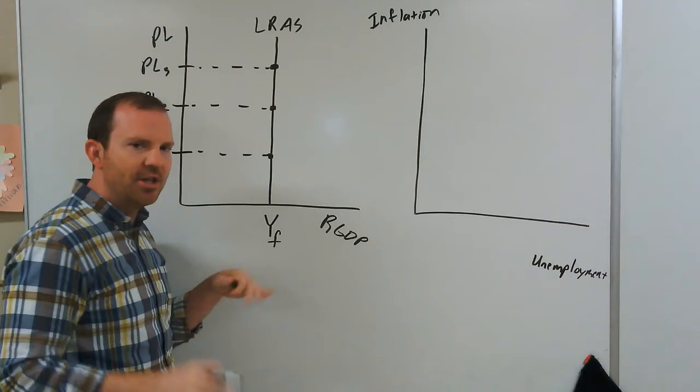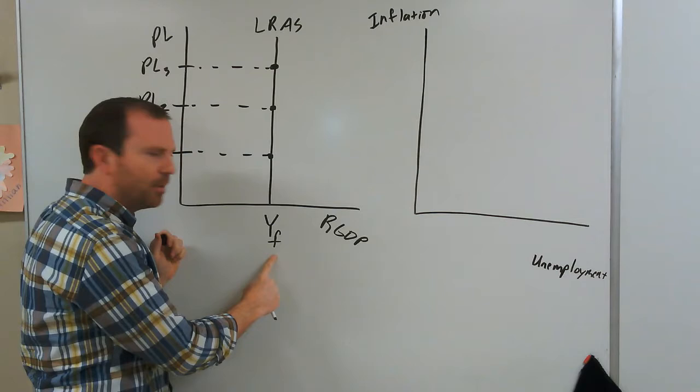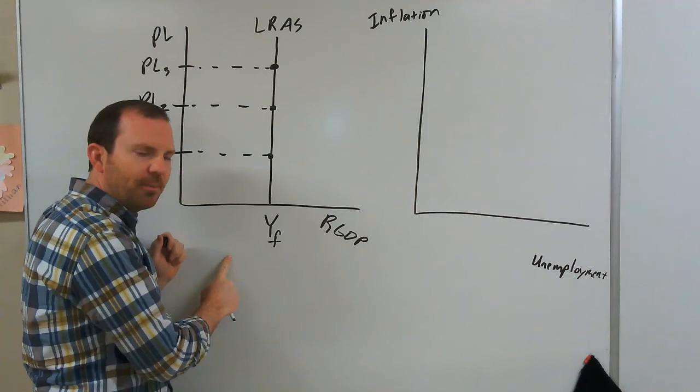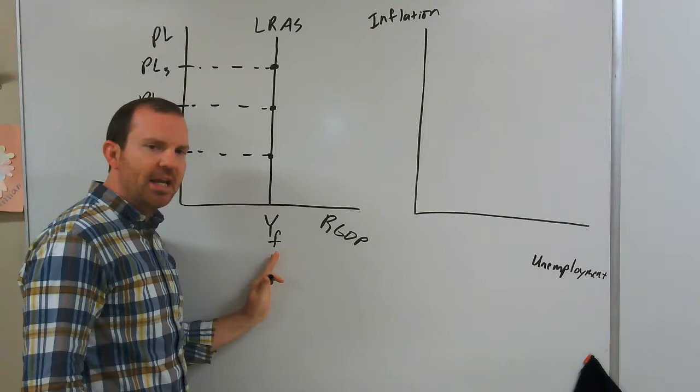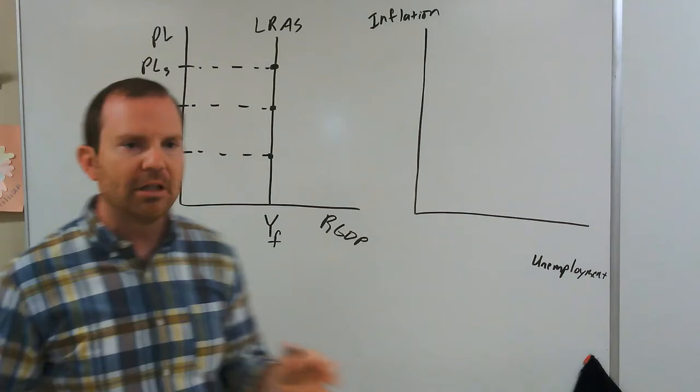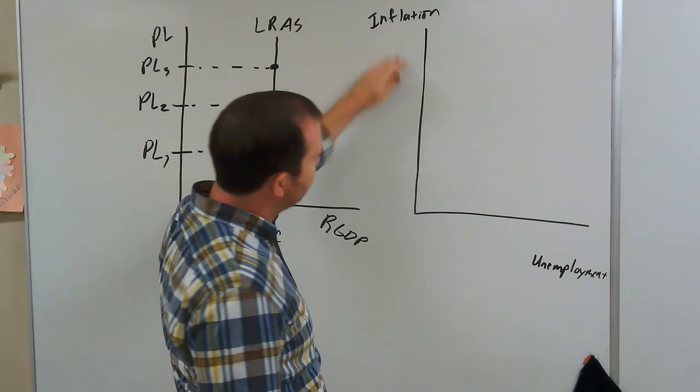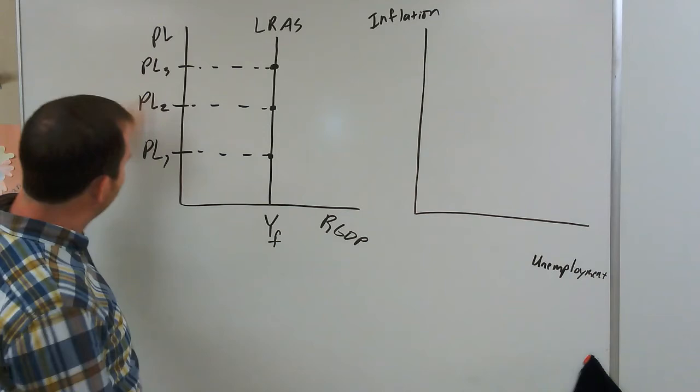Here's the thing: the way that we figure out what's going on with unemployment is what's going on with output. When output rises, unemployment falls. When output decreases, unemployment increases. So if our price level changes — when we're experiencing inflation or deflation — if our output doesn't change, then what that tells us is that inflation and unemployment are no longer related to each other. There's no trade-off anymore. Regardless of what the value of inflation is, this unemployment rate isn't changing. No matter what the price level does, output level doesn't change, so unemployment doesn't change.